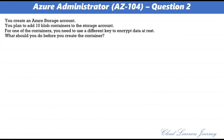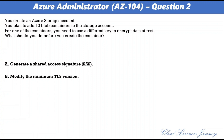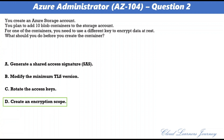Question 2. You create an Azure storage account and plan to add 10 blob containers to it. For one of the containers, you need to use a different key to encrypt data at rest. What should you do before you create the container? Options: A: Generate a shared access signature, B: Modify the minimum TLS version, C: Rotate the access keys, D: Create an encryption scope. The correct answer is D: Create an encryption scope.